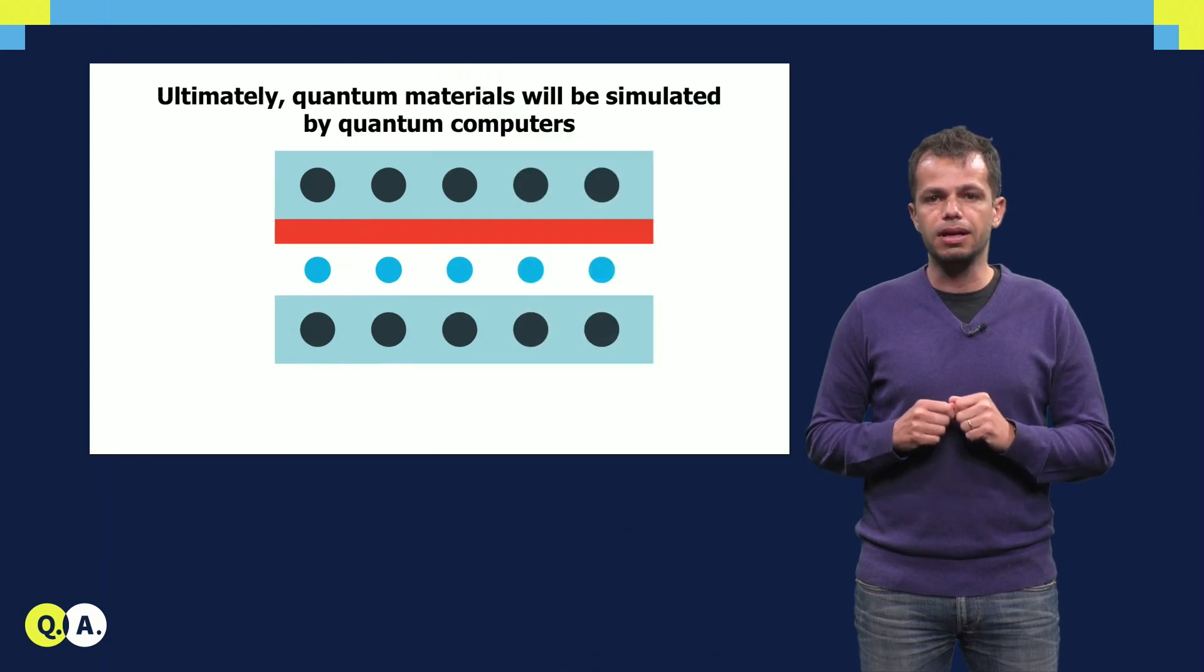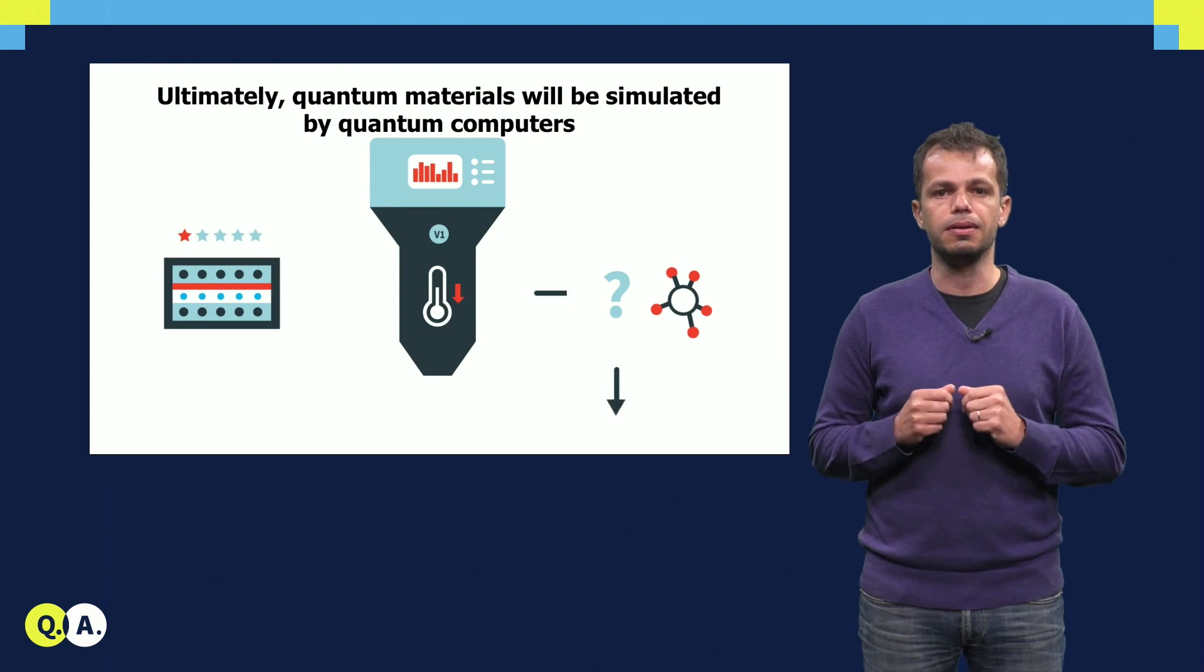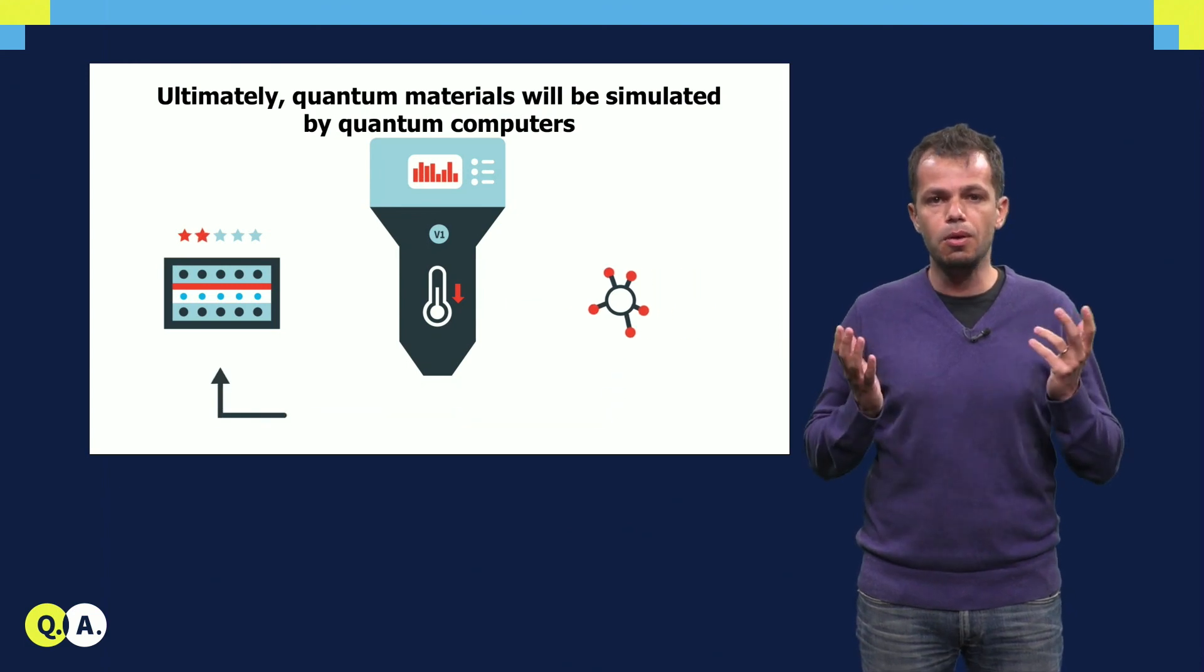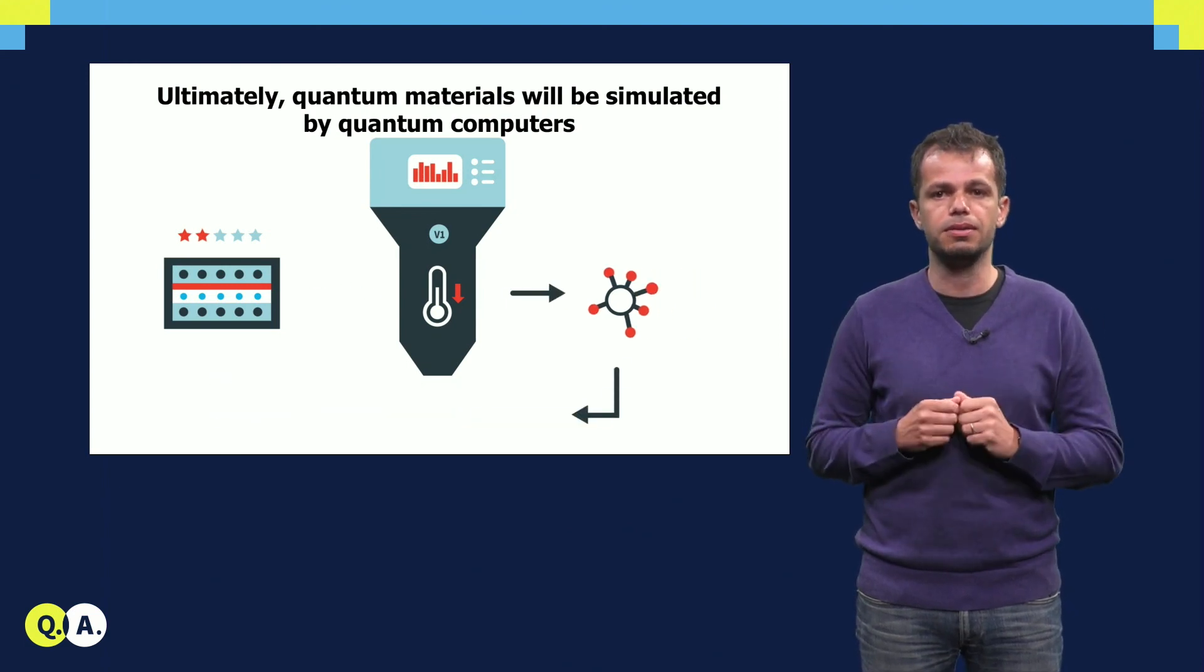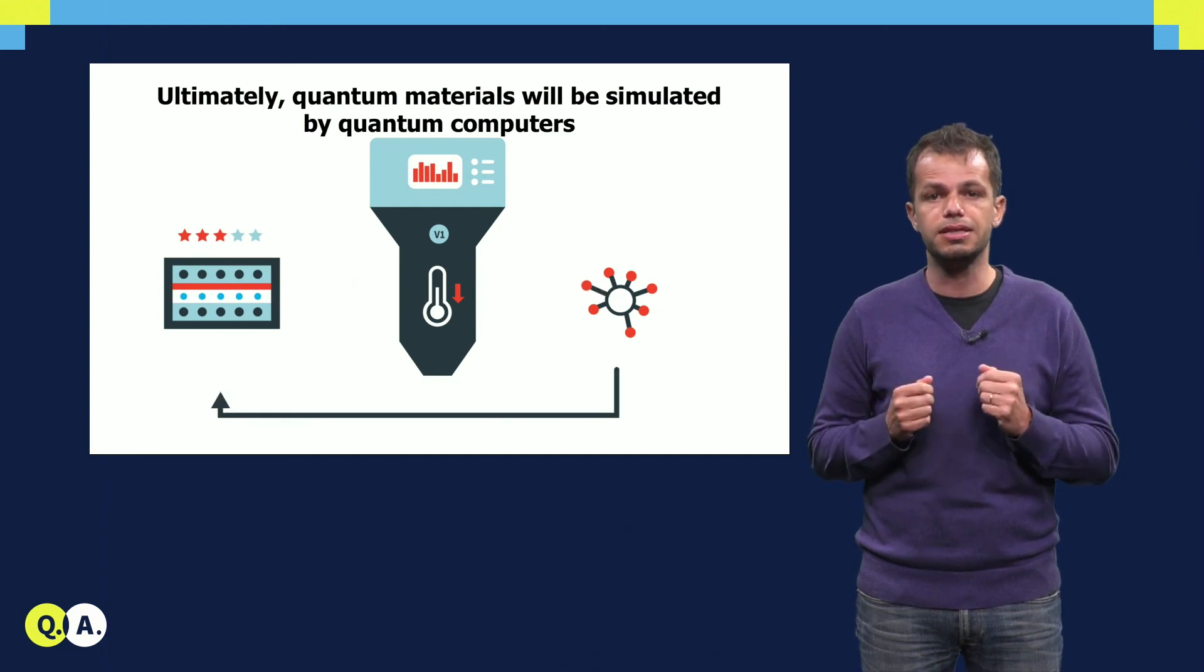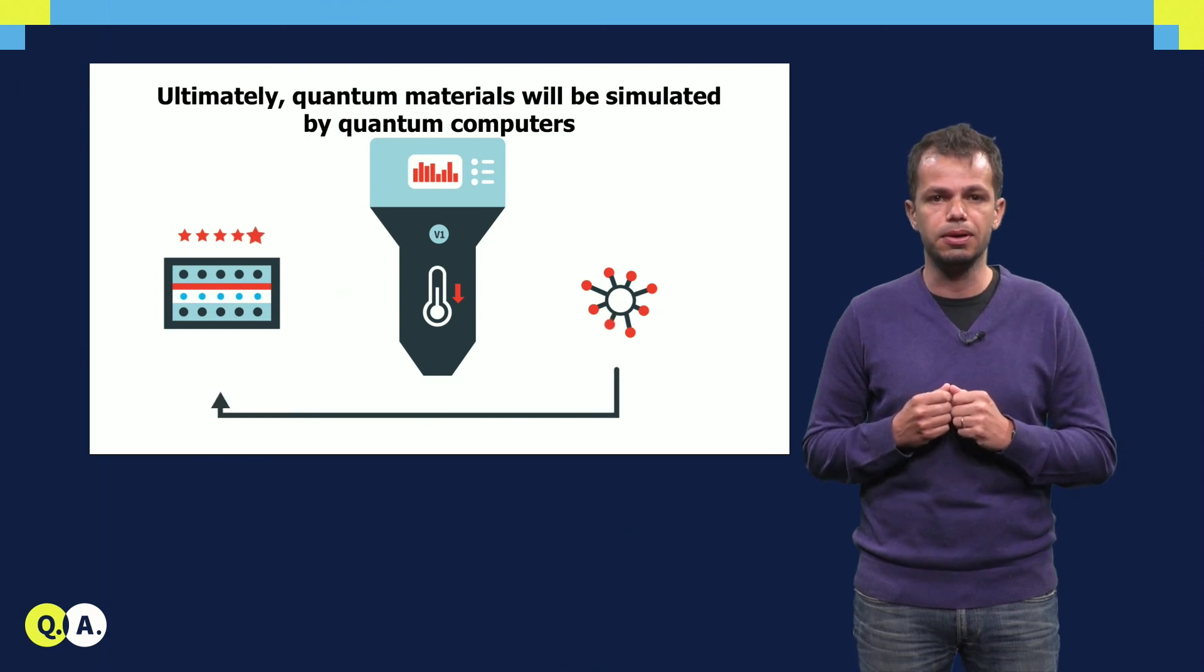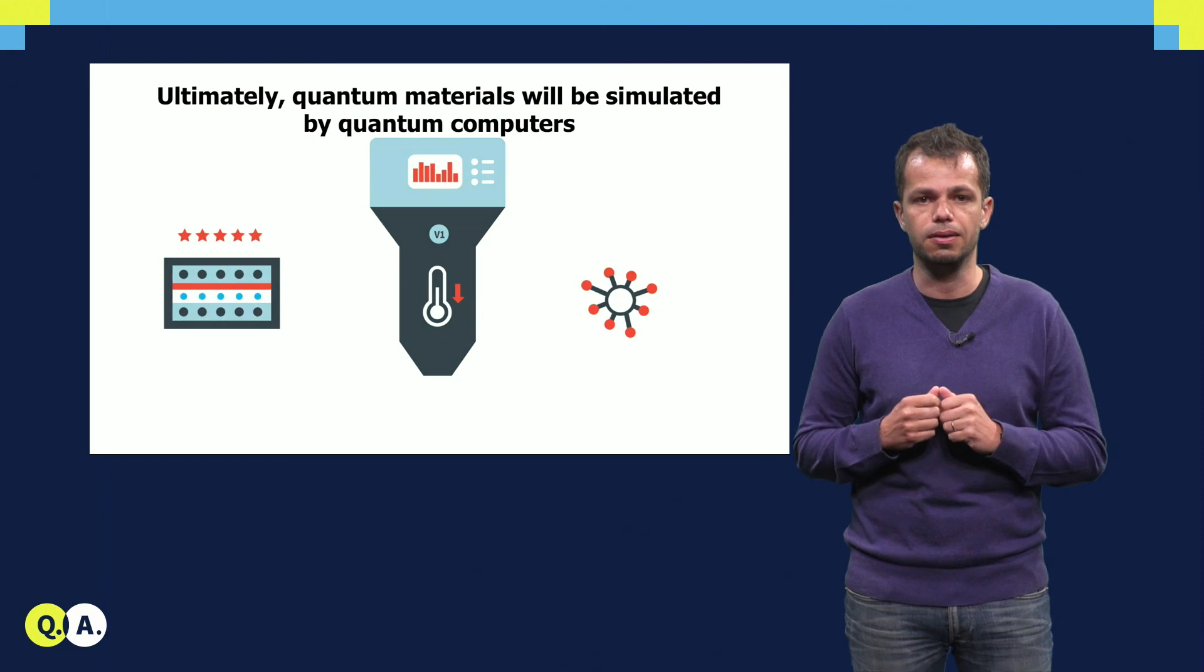And while we are currently optimizing quantum materials to build a quantum computer, ultimately the hope is that when such a machine will exist, one of the first uses will be to efficiently simulate quantum systems, fulfilling the vision put forward by Richard Feynman more than 30 years ago.